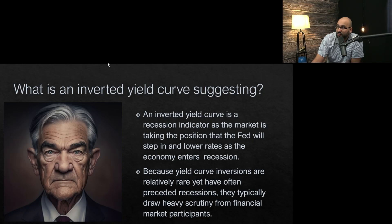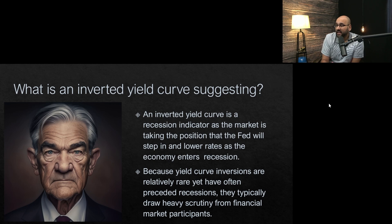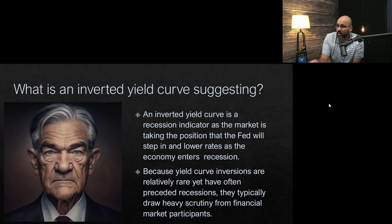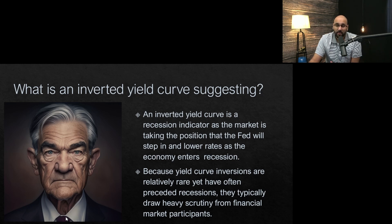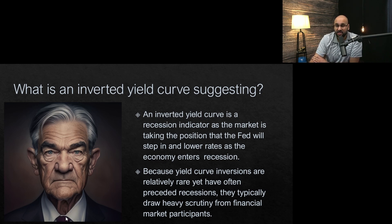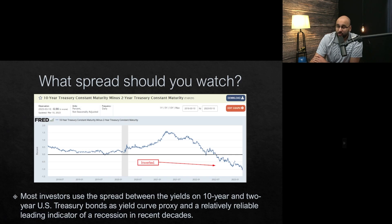So what exactly does an inverted yield curve suggest? An inverted yield curve is actually a recession indicator, as the market is taking the position that the Fed will step in and lower rates as the economy enters into a recession or even just a challenging environment. Because yield curve inversions are relatively rare, they have often preceded recessions and generally draw heavy scrutiny from investors, as it is a forward-looking indicator of challenges that could be coming on the horizon.